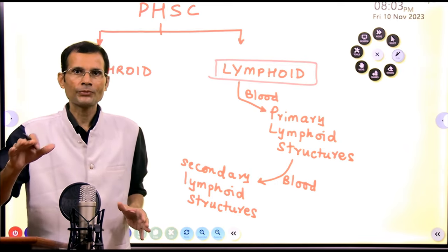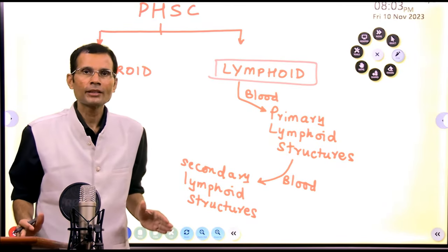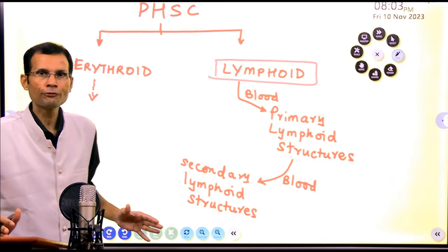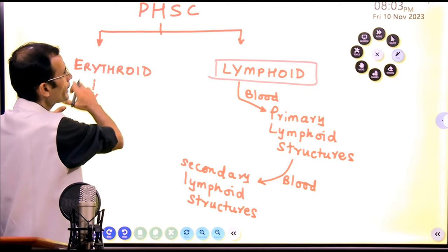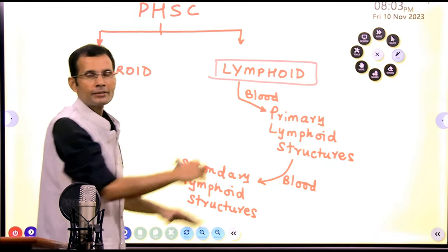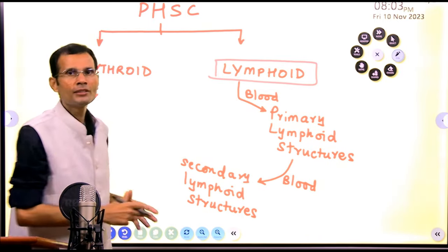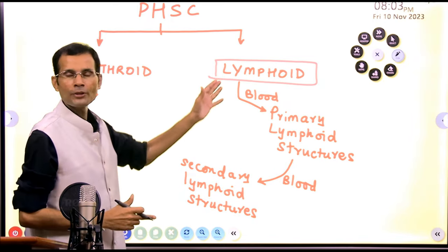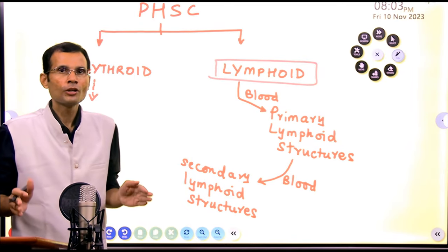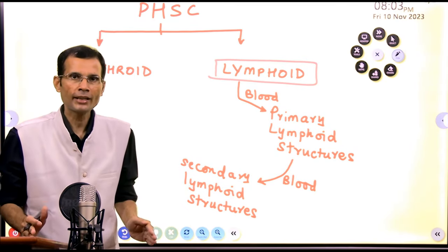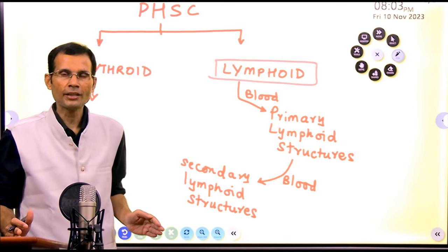Why do we see developmental stages of lymphocytes in the peripheral blood? That's the moot question. A pluripotent hematopoietic stem cell in the bone marrow is going to form all blood cell types. It forms a committed stem cell of the erythroid series and a committed stem cell of the lymphoid series. This lymphoid series cell, now committed to form lymphocytes, leaves the bone marrow. The key point is: lymphocytes leave the bone marrow at an early stage of development and maturation.